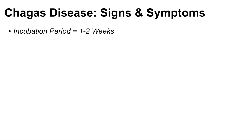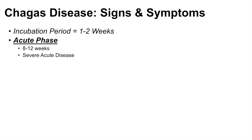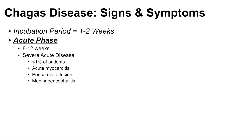When a person is first infected with Chagas disease, there's an incubation period of around one to two weeks. After that, there's an acute phase which lasts about eight to twelve weeks. During the acute phase, less than one percent of patients experience severe acute disease, including acute myocarditis, pericardial effusion, and meningoencephalitis. This severe acute disease usually only occurs in individuals infected through oral transmission.